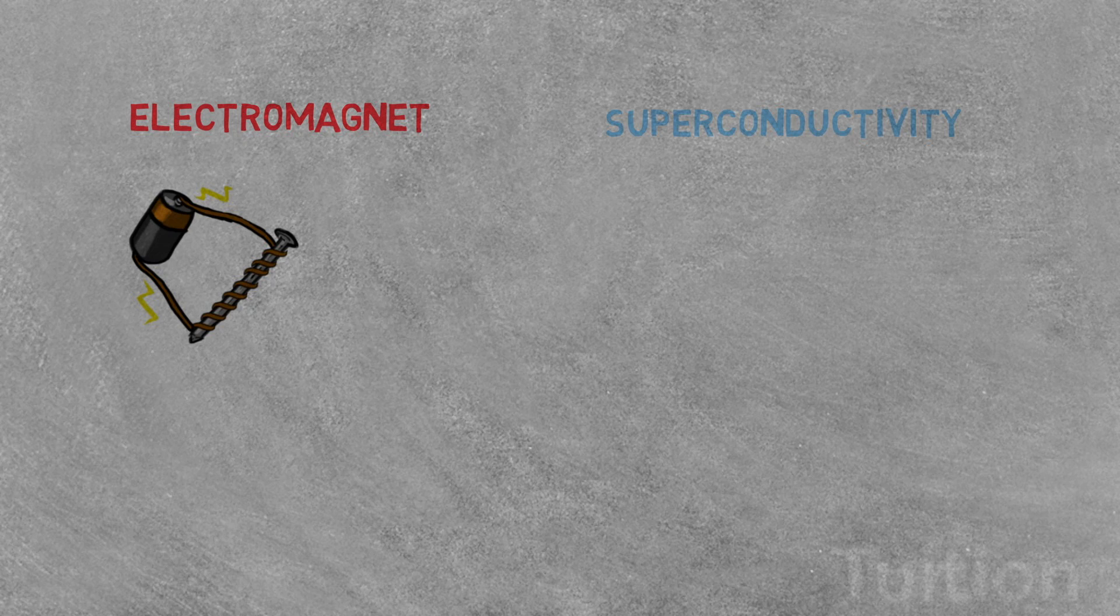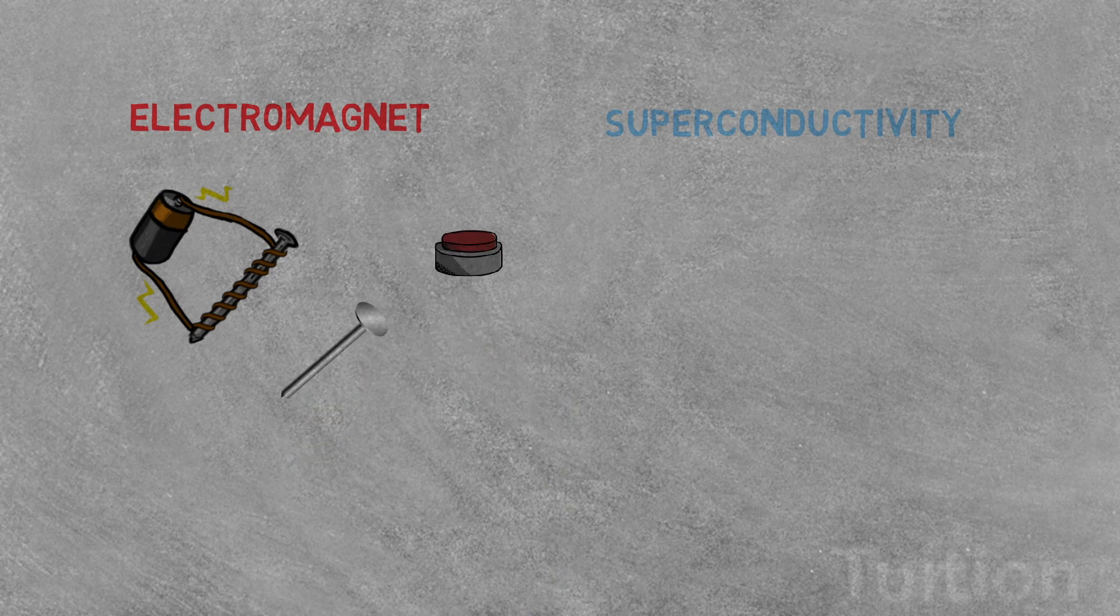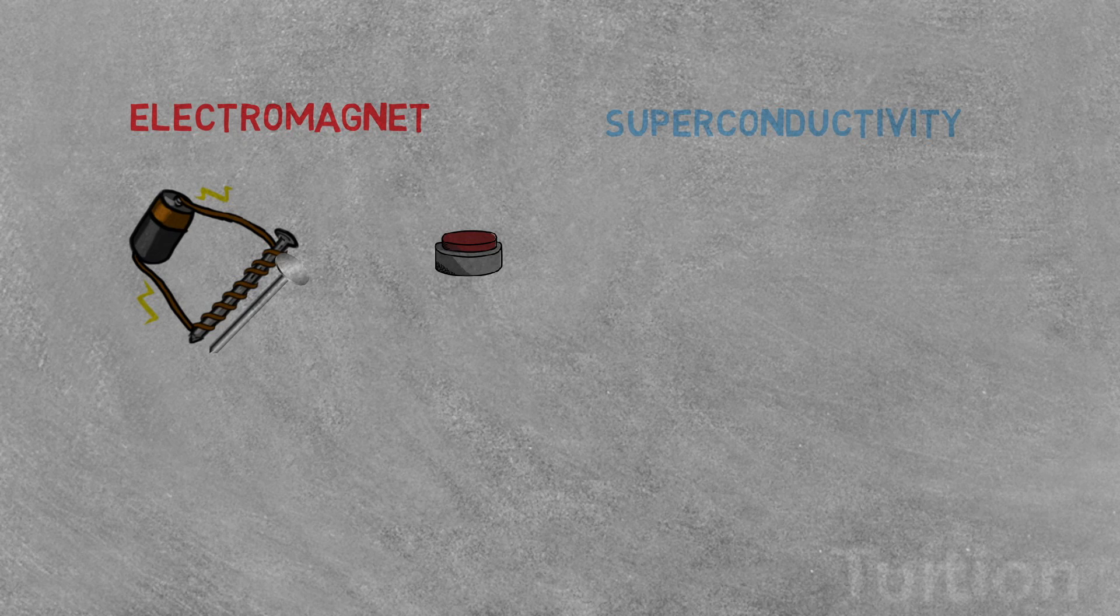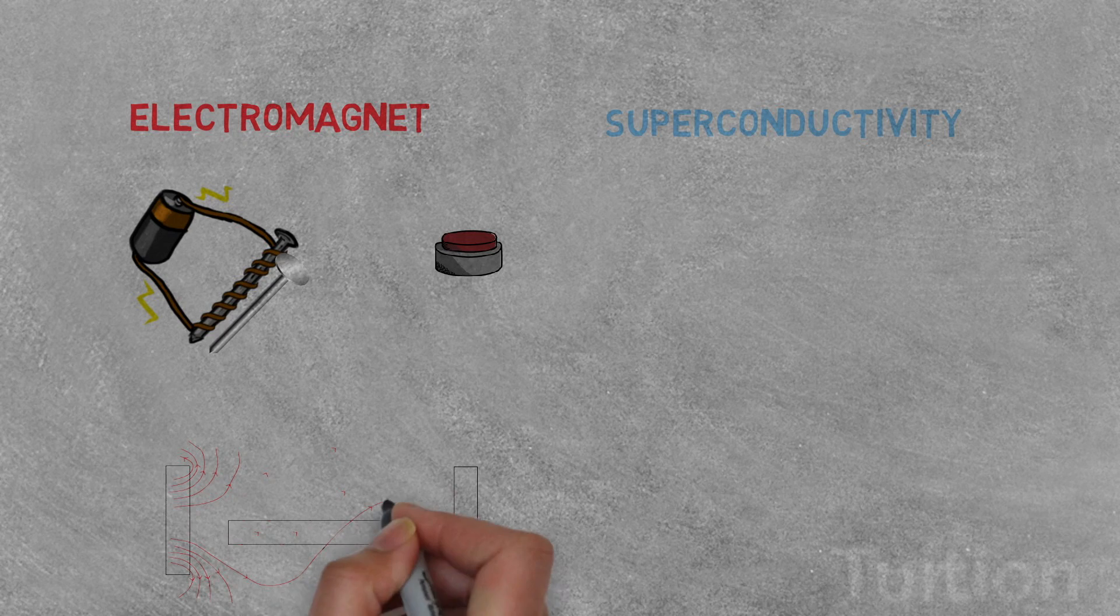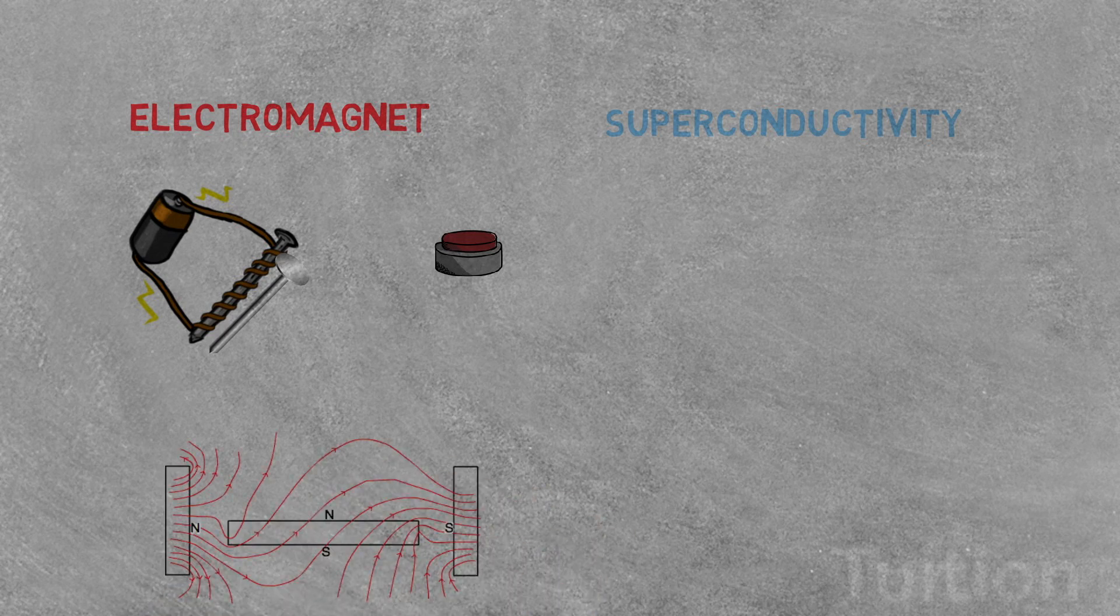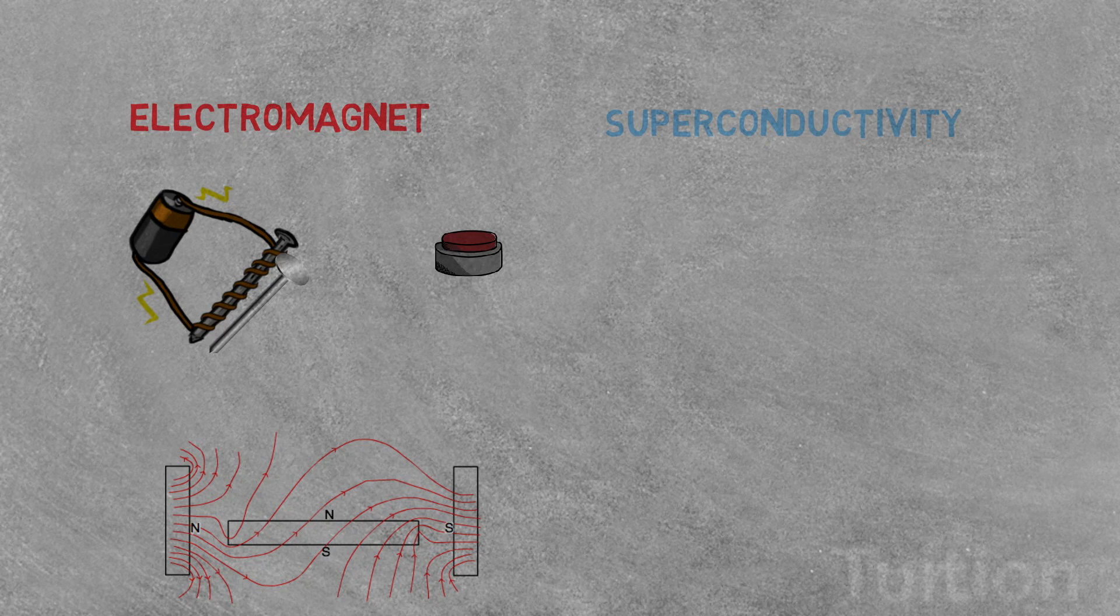Electromagnets usually consist of insulated wire bound into a coil. A current through the wire creates a magnetic field which is concentrated in the hole in the center of the coil. The wire turns are often wound around a magnetic core made of ferromagnetic or ferrimagnetic materials such as iron. The magnetic core concentrates the magnetic flux and makes a more powerful magnet.